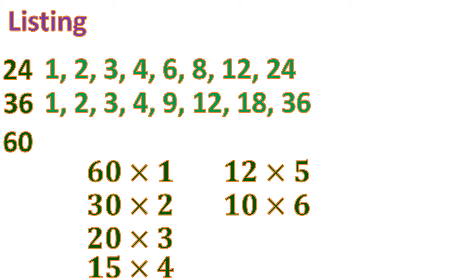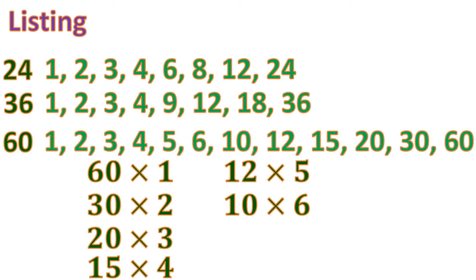Now let's write the factors of 60 based on the pairs we produced. The factors of 60 are: 1, 2, 3, 4, 5, 6, 10, 12, 15, 20, 30, and 60.